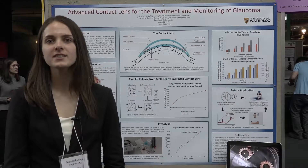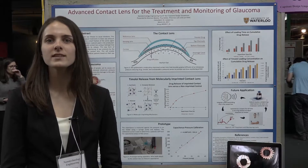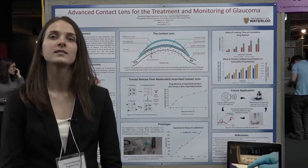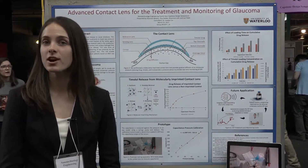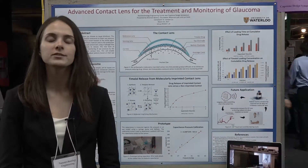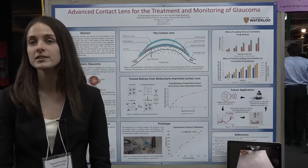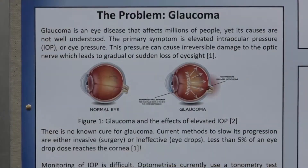According to the World Health Organization, glaucoma is the second most common eye disease to cause blindness. The primary symptom of this disease is elevated intraocular pressure, or IOP, which refers to the pressure in your eye. What happens is the elevated pressure causes damage to your optic nerve, and this results in vision loss. The damage caused by progressive glaucoma is irreversible.